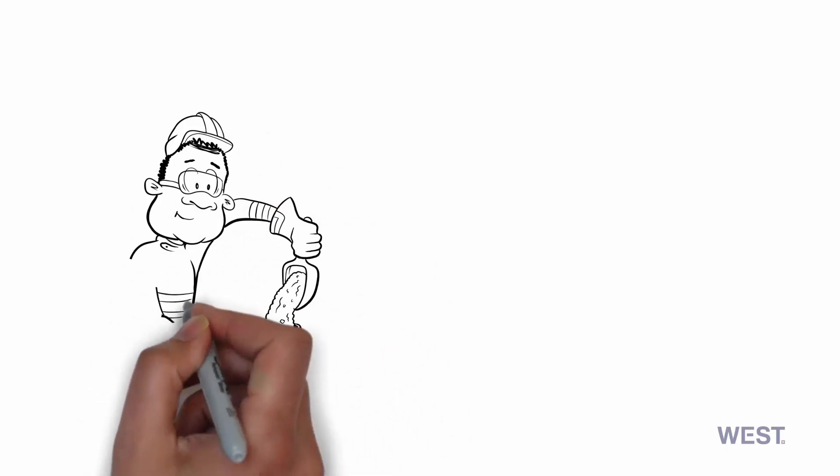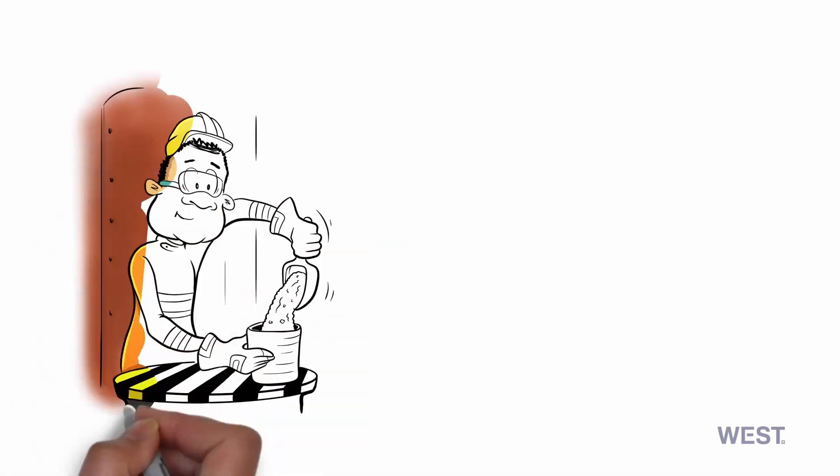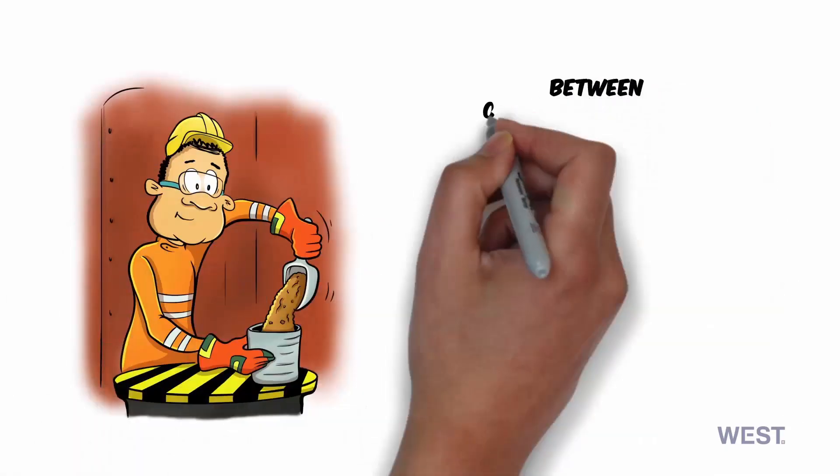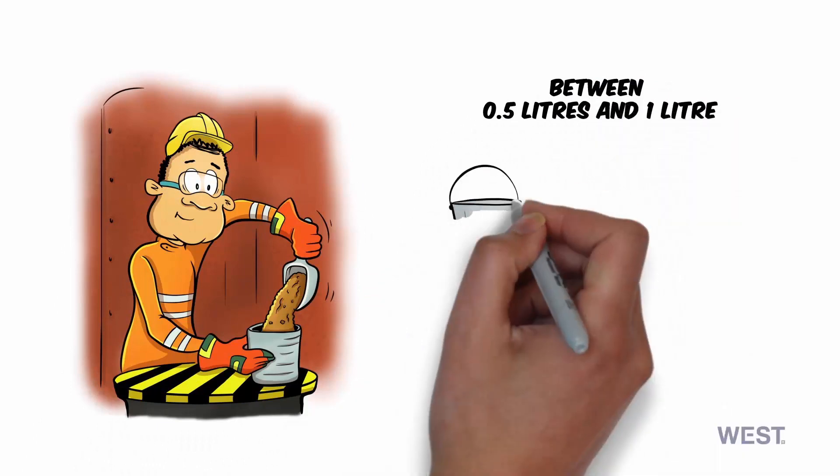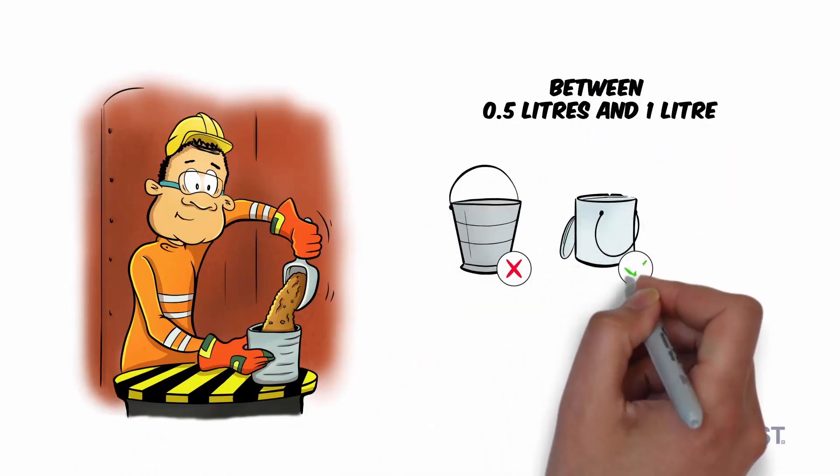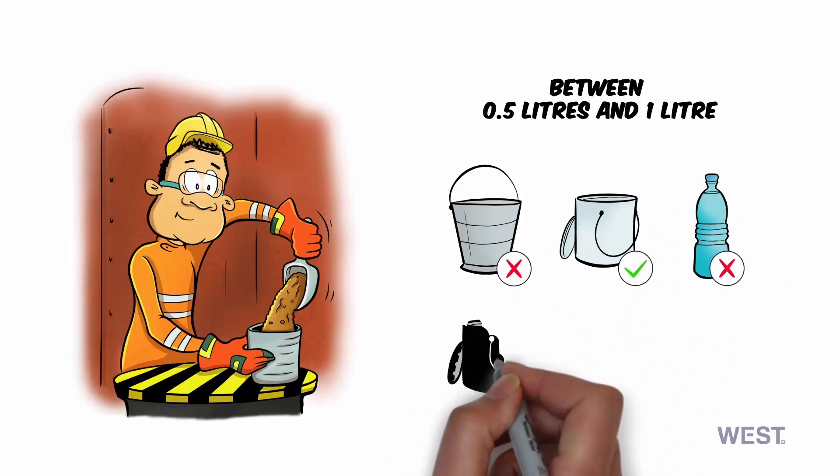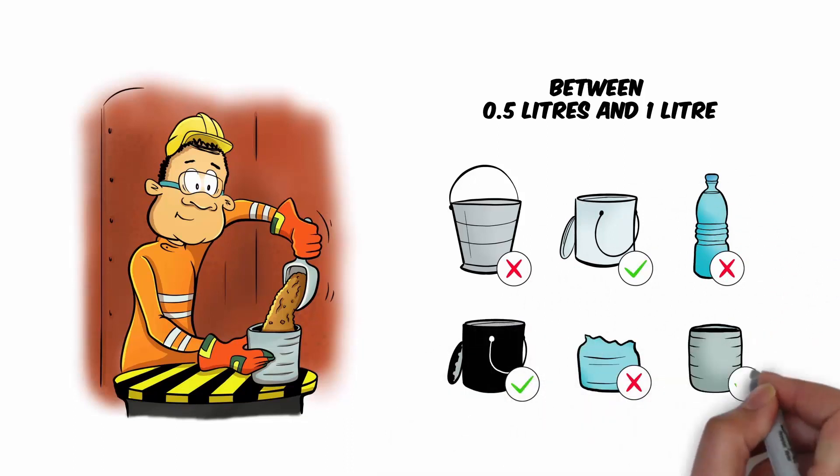A can test must be carried out as follows: Half fill a cylindrical can or similar container between half a liter and a liter in capacity with a sample of the material. The container must be rigid and not fragile. Using a metal container of sufficient wall thickness is required.